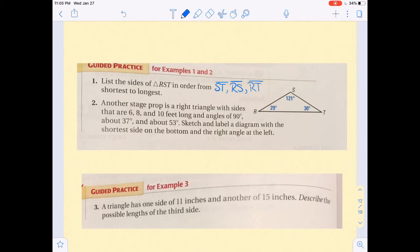And then you're left with the 121 as the biggest, opposite the RT or TR. Number 2 says another stage prop. So they're saying another because one of these examples used a stage prop in it. So another stage prop is a right triangle with sides that are 6, 8, and 10 feet long and angles of 90 degrees, about 37 degrees, and about 53 degrees. Sketch and label a diagram with the shortest side on the bottom and the right angle at the left.